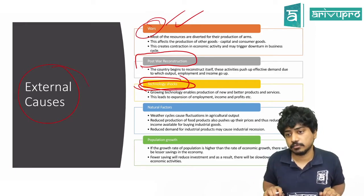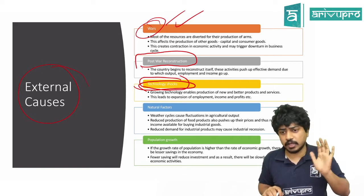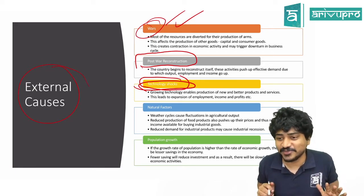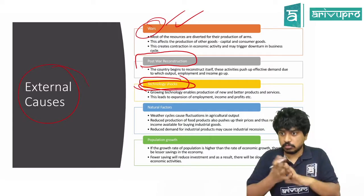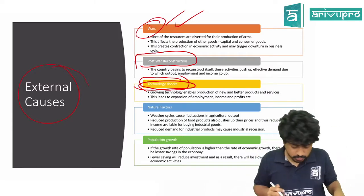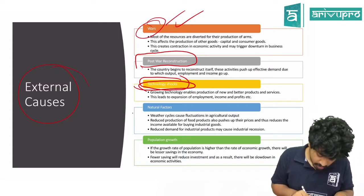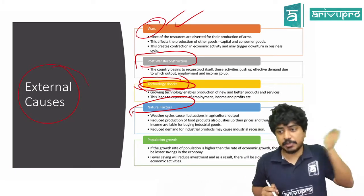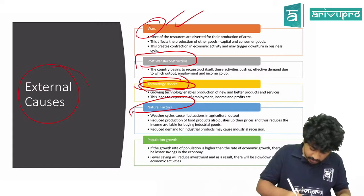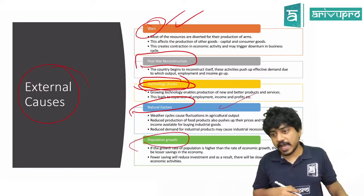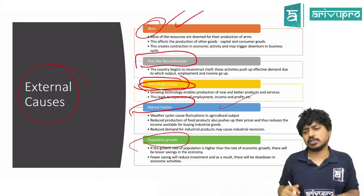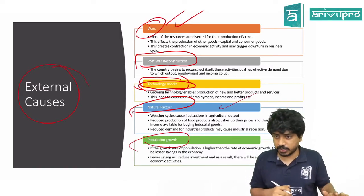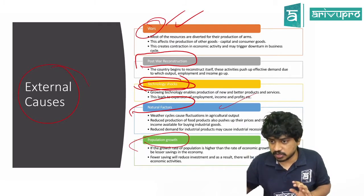For example, Jio came with free 4G — other companies' businesses got affected. That is a technological shock. Natural factors like COVID, tsunamis, earthquakes — all external factors which affect businesses. Population growth: if population is growing, more people will buy. If the growth rate of population is higher than the growth rate of the economy, there will be lesser savings, fewer investments, and a slowdown in economic activity.